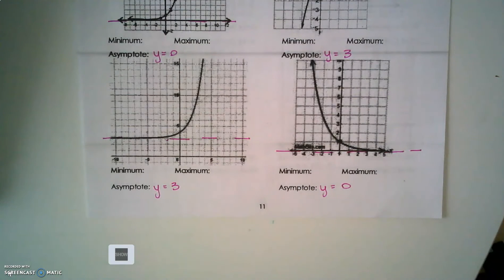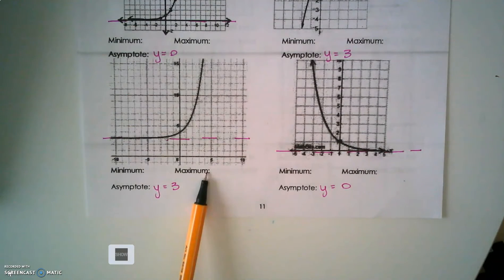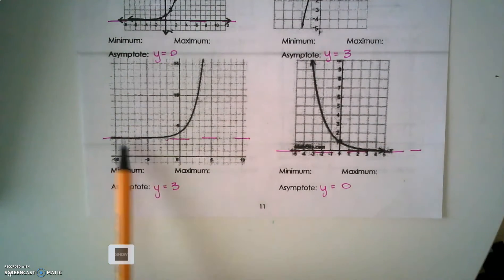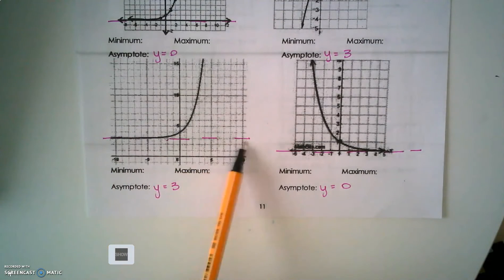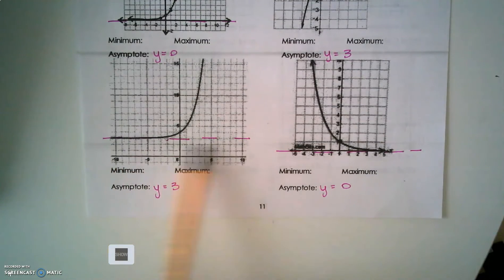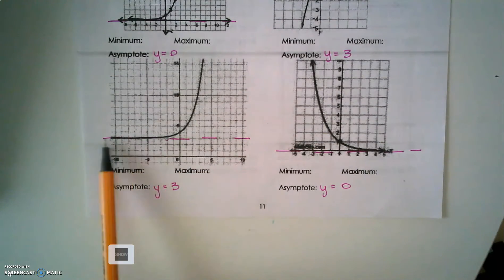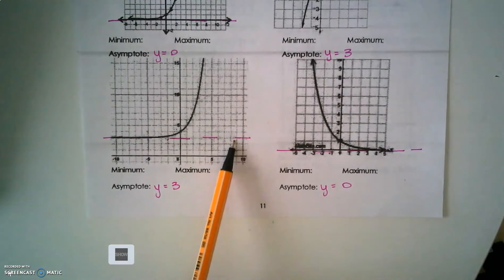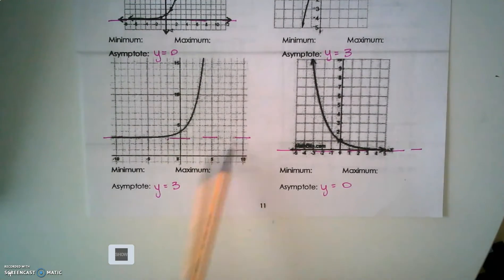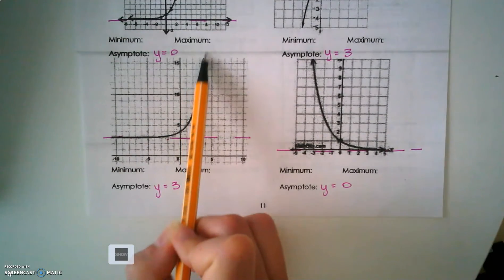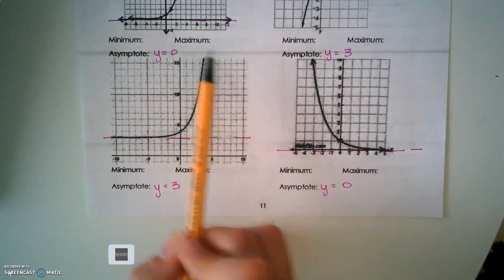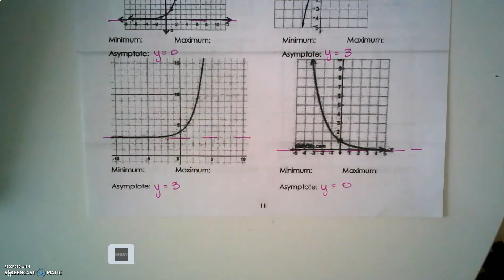Again, the maximums and minimums cannot exist. For example, there's no minimum — the lowest value here is an asymptote, but I can't actually reach it. There's no maximum because the graph falls off and goes on forever. Infinity is a number we can't reach.